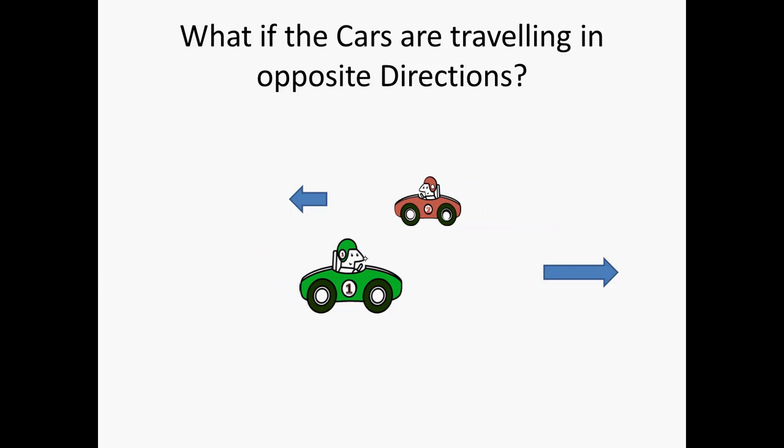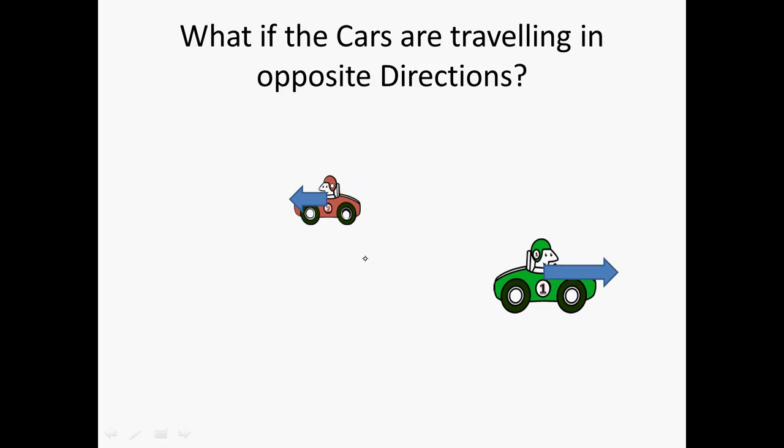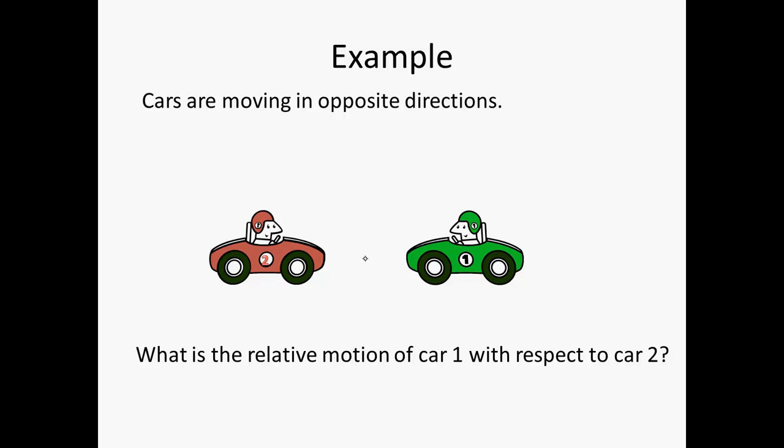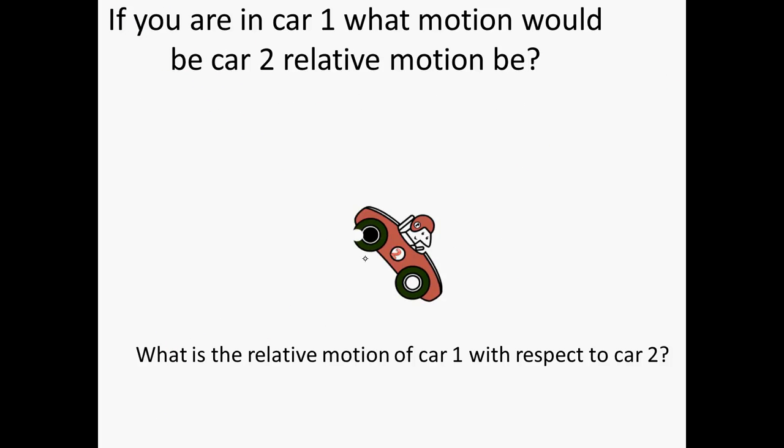So if you've got cars that are travelling in opposing directions, it makes sense. If you're driving past a car in a motorway, it seems faster. So now, these are more complicated problems when you've got cars going at angles.